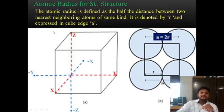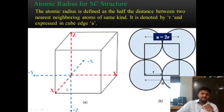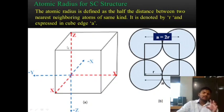This is the simple cubic structure, and the atomic radius is found from the figure. The figure shows the x-axis, y-axis, and z-axis of the unit cell.